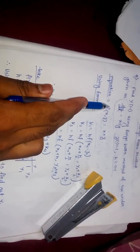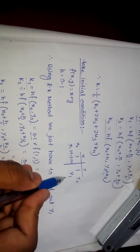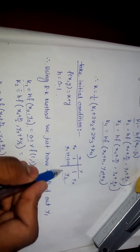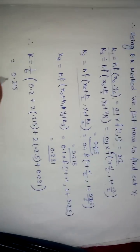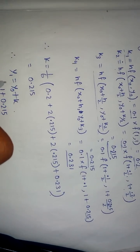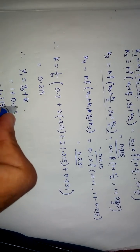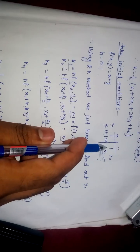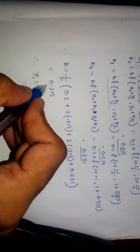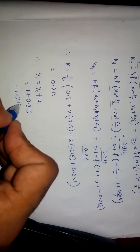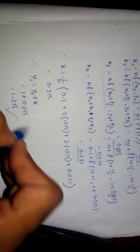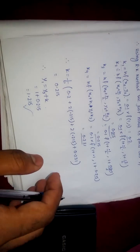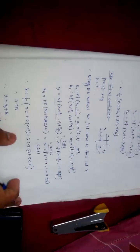Now we just have to calculate y1, since that is the value we want. y1 equals y₀ plus K, where y₀ is 1 and K we have found to be 0.21, so the value of y1 equals 1.21.